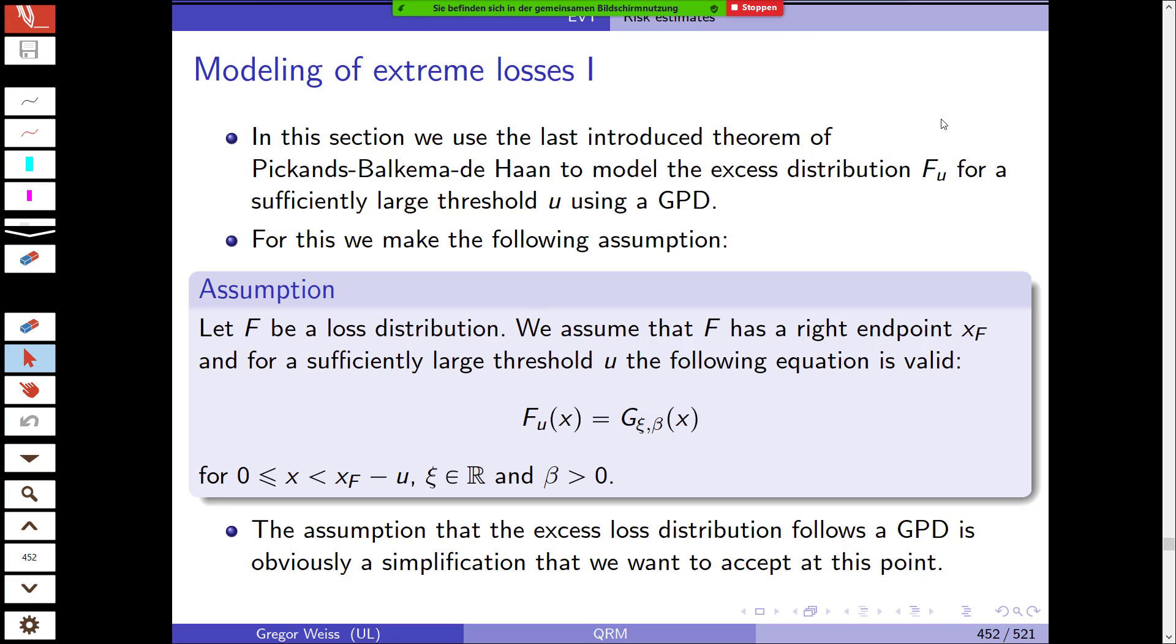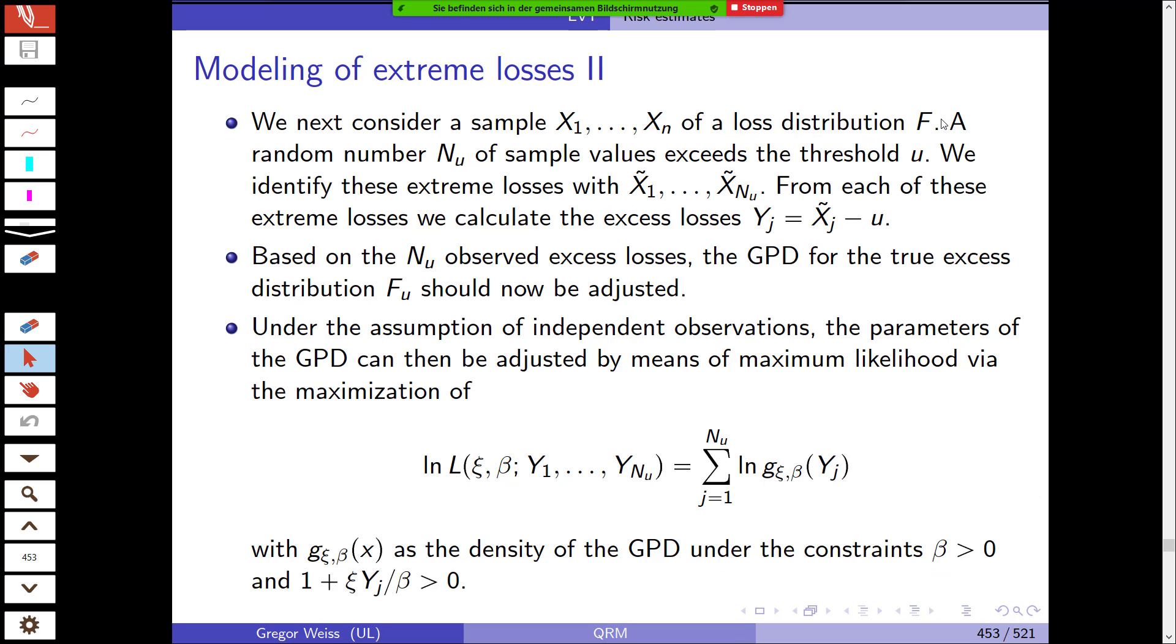The assumption that the excess loss distribution follows a generalized Pareto distribution is obviously a simplification, but we simply accept this. For this theorem to hold we need to know the maximum domain of attraction. Let's assume all these assumptions are fulfilled, that F lies in the maximum domain of attraction of a GPD.